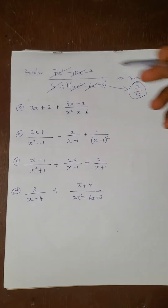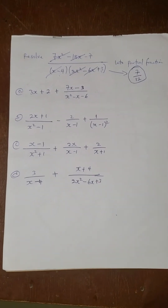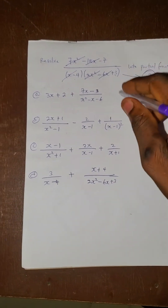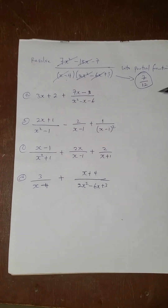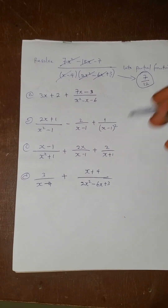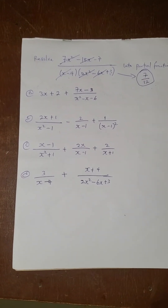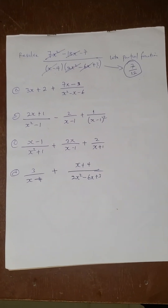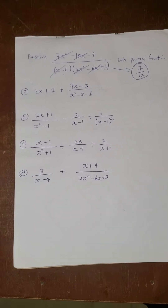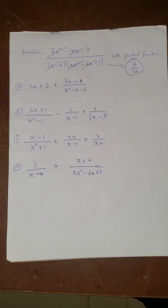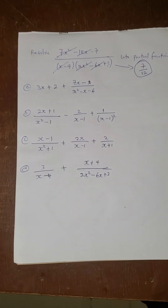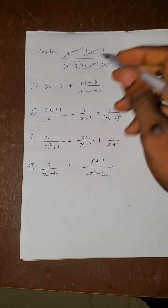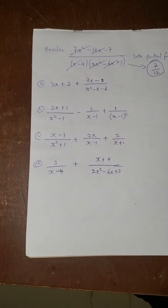So since I got 7 over 12 from the question, I will now come to the options and do the same thing. The answer that gives me 7 over 12 is the right answer. If you use your AND method to solve it, you will still get the same thing.